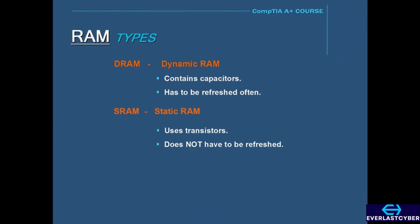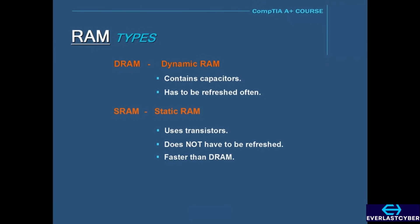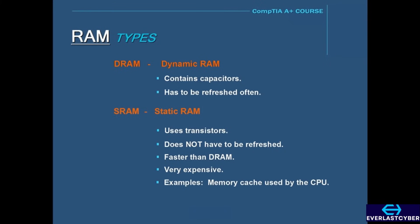Because of this, SRAM is much faster than DRAM, and it is also very expensive. An example of SRAM would be the memory cache levels 1 and 2 that are used by the CPU.